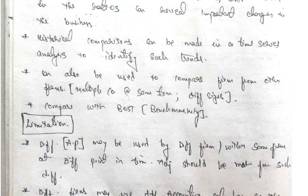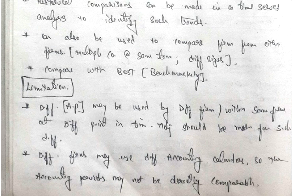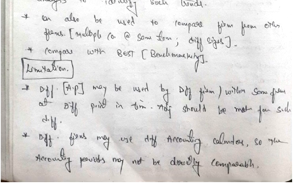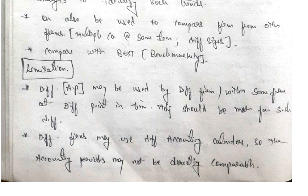Can also be used to compare forms from other forms, multiple companies at the same time, different sizes compared with best benchmarking. Limitations are different accounting policies may be used by different firms, within same firm at different point of time. Adjustment should be made for some differences. Different firms may use different accounting calendars so the accounting periods may not be directly comparable.